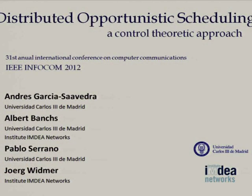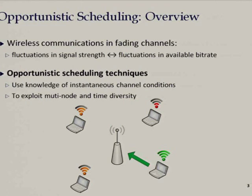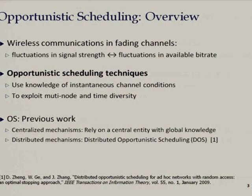Opportunistic scheduling techniques are widely known to wireless people. The basic idea is to take advantage of the fluctuation of channel quality over time in order to schedule stations at times when the quality is good, so that you can increase the overall throughput. These techniques have been around for many years and are quite well studied and developed.